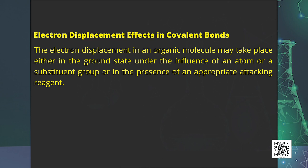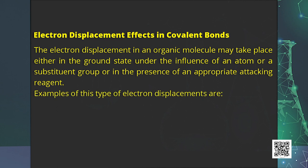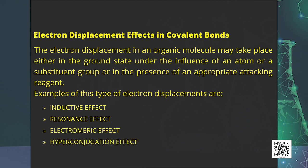Our next topic is electron displacement effects in covalent bonds. The bonding pairs of covalent bonds undergo electronic displacements in the ground state, under the influence of a substituent group, or in the presence of an attacking reagent. These displacements may be permanent or temporary. Four types are generally observed: inductive effect, resonance effect, electromeric effect, and hyperconjugation effect.